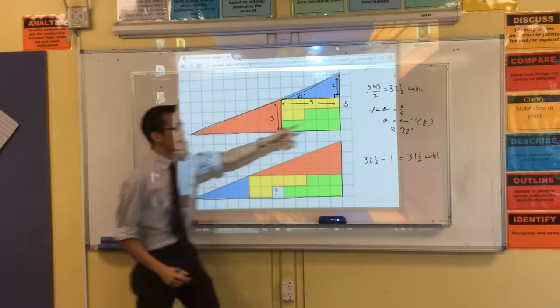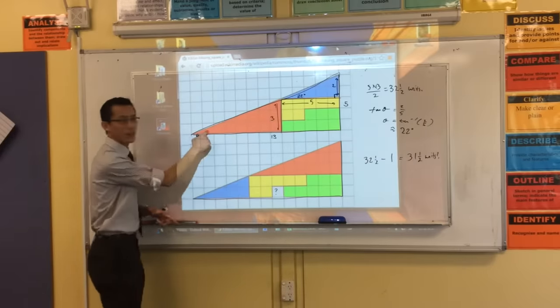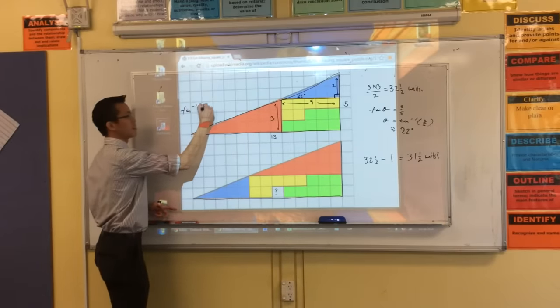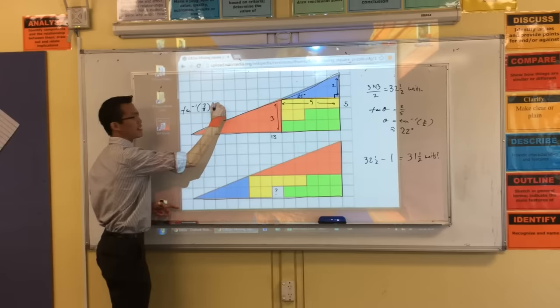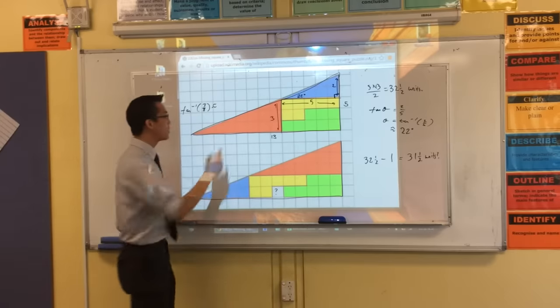So, I can write 22 degrees up here, but when you have a look at this angle, right? Instead of tan inverse of 2 fifths, it's really tan inverse of 3 eighths. Now, what's that to the nearest degree?